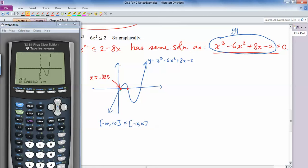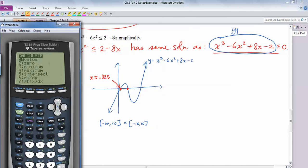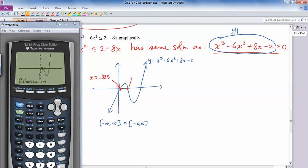And then if I find this zero, so second calc 0, let's see. That's between 2 and 3. Oh, no, sorry. It's between 1 and 2. Let's do that again. Second calc 0. Between 1 and 2. And it's about there. So that zero is at about 1.461.